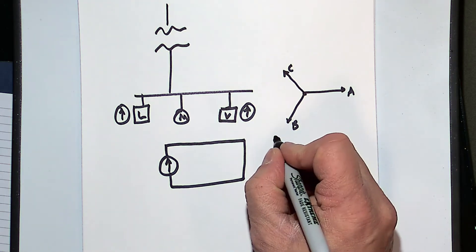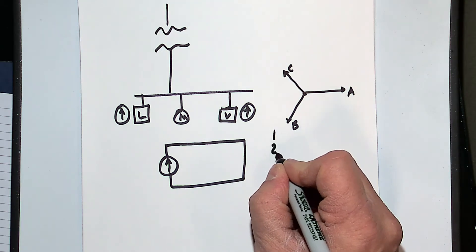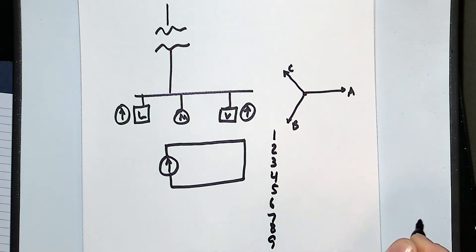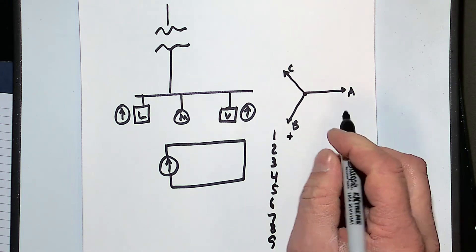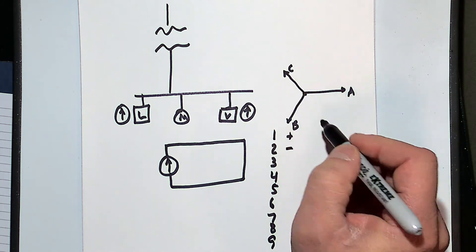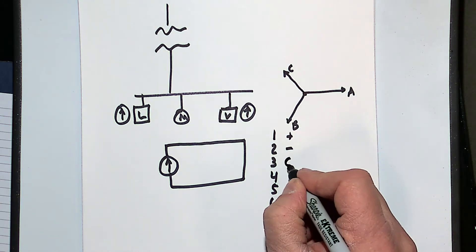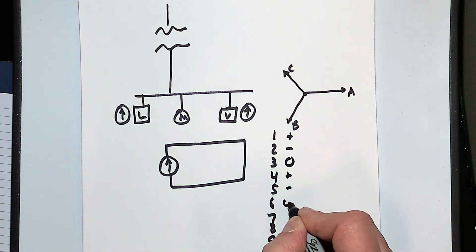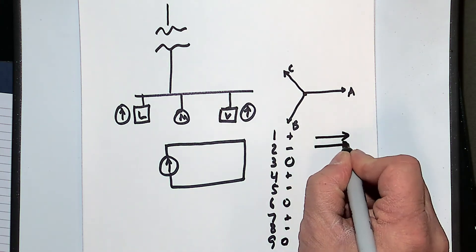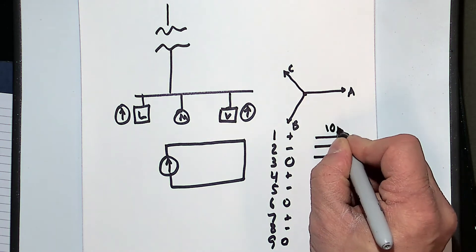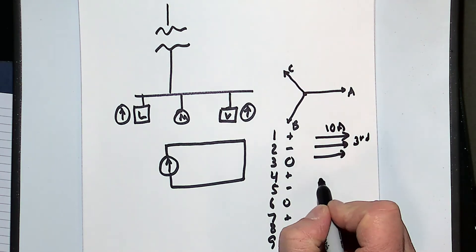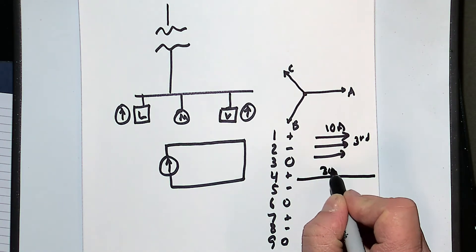If I look at the spectrum of harmonics, my fundamental is the first harmonic, then I have second, third, fourth, fifth, sixth, seventh, eighth, ninth. If we say the fundamental is a positive sequence harmonic, negative sequence flows the opposite direction. Zero sequence follows the pattern plus, minus, zero repeating. Zero sequence harmonics add up — so with A plus B plus C, if I had 10 amps of third harmonic on each phase, on my neutral I would get 30 amps.